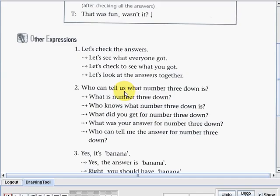Okay. Another way of saying that is, What is number three down? Who knows what number three down is? Or what did you get for number three down? Another here is, What was your answer for number three down? And the last one, we have the question, Who can tell me the answer for number three down? Okay. So those are some of the questions that a teacher can also use. If the teacher wants to know what number three down is, I mean, what's the answer for that specific number.